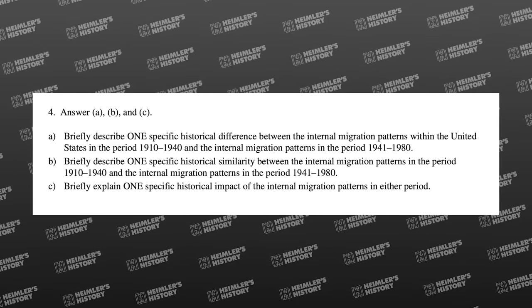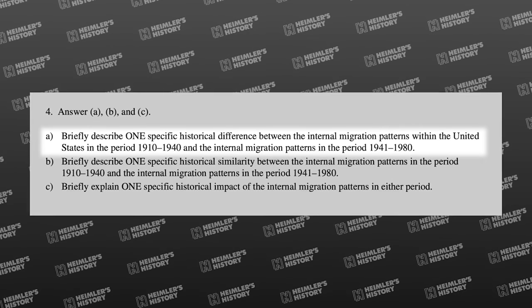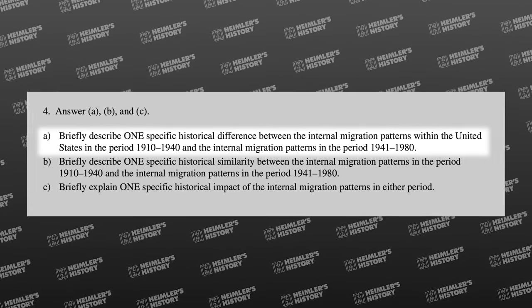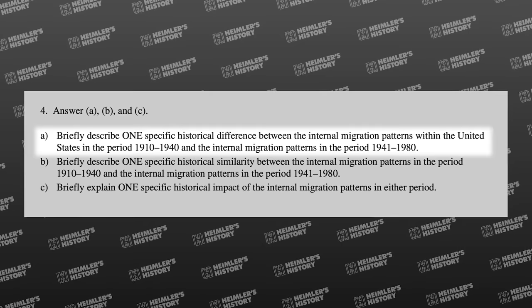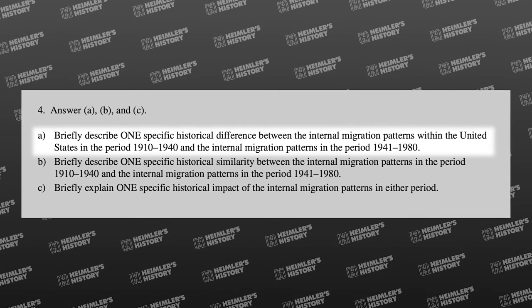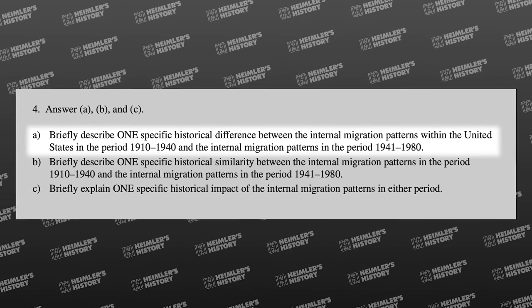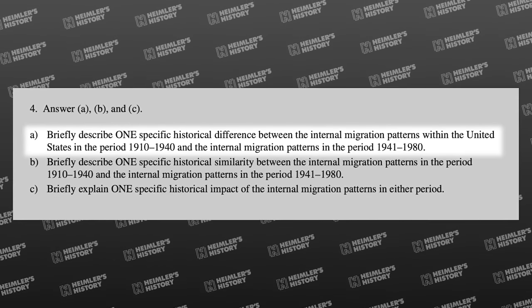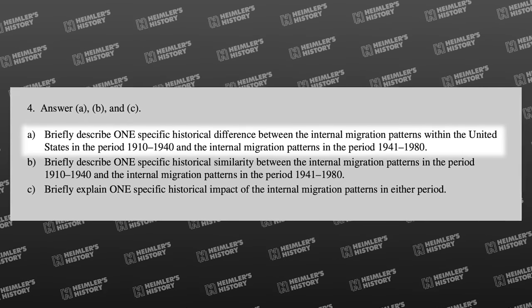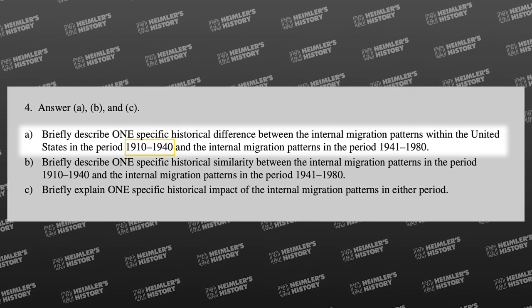Now let's look at an example for AP US History. In this one we'll use an SAQ without a stimulus from the 2018 exam. We're just going to answer Part A: 'Briefly describe one specific historical difference between the internal migration patterns within the United States in the period 1910 to 1940 and the internal migration patterns in the period 1941 to 1980.' They're asking us to compare internal migration patterns from two periods, so in order to get credit, you have to address both periods.